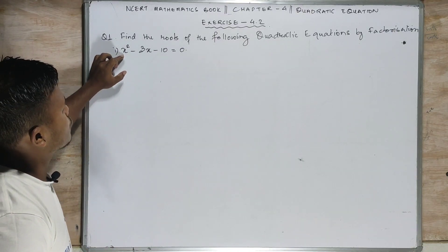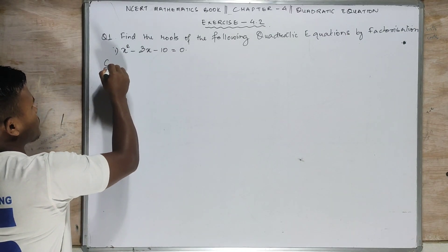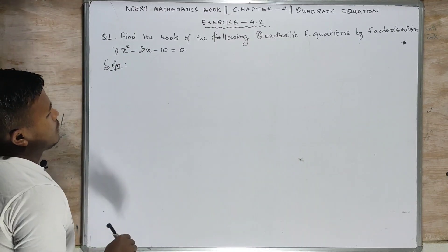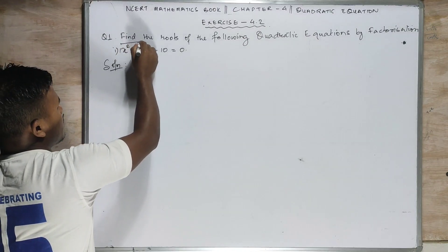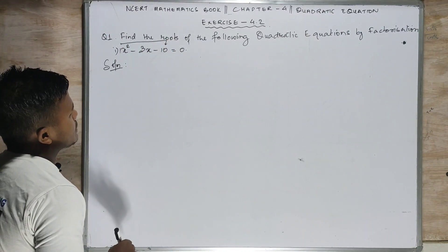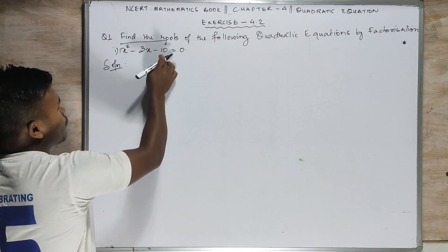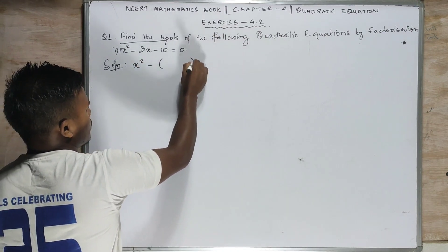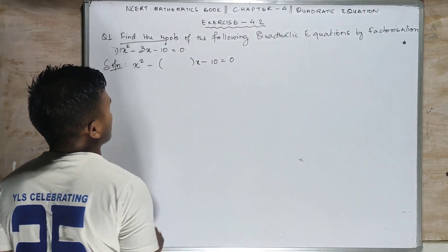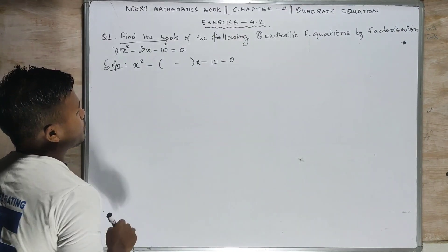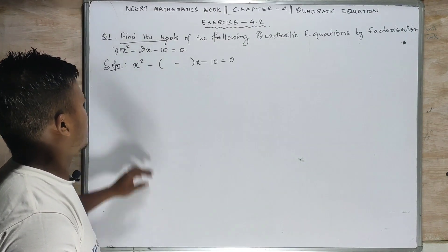In question number one it is given: x squared minus 3x minus 10 is equal to 0. As I told you in the last class, you have to see the multiplication result of the first coefficient and the last constant term. If you multiply 1 into 10 it is 10. Since it is the middle term, you write the corner two numbers as they are, and since the last sign is negative, you put a negative sign here.